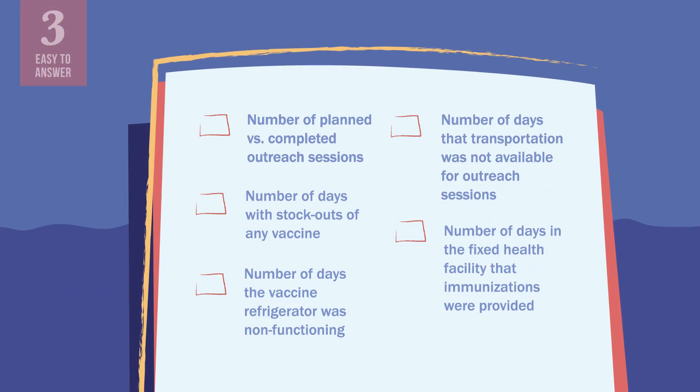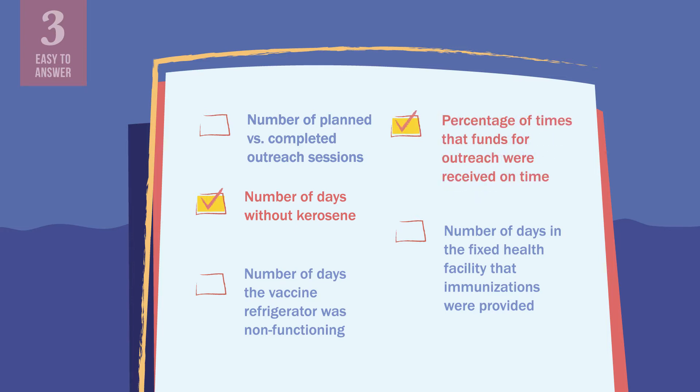For example, one country developed an indicator to track the number of days without kerosene for refrigerators. Another country tracked whether funds for outreach activities were received on time. Indicators will evolve to match the changing priorities and challenges of your area. So, make sure everyone at the facility, district and regional level knows which indicators to track as part of data monitoring, in order to gain a deeper understanding of your program's performance. And use what you learn to take action.